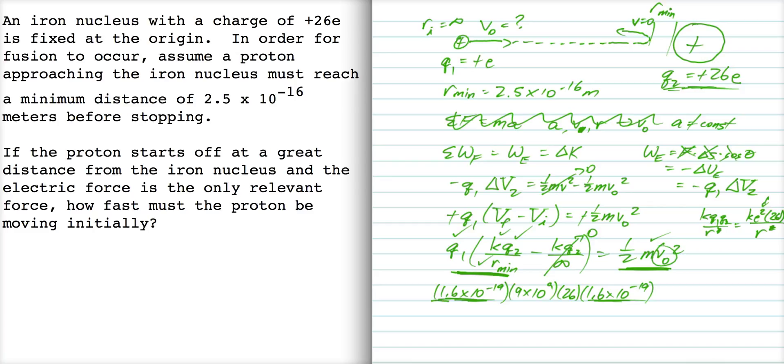I'm trying to be a little more thorough about this. Now r min is up here, that's 2.5 times 10 to the minus 16.